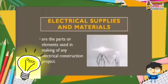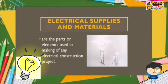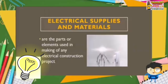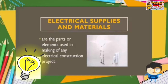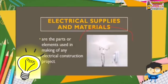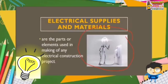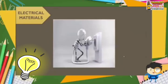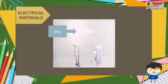I will be discussing the uses of the different electrical supplies and materials. Electrical supplies are basically the parts or elements used in the making of any electrical construction project, just like in this chip. There are five electrical materials present here. The first one is lamp.